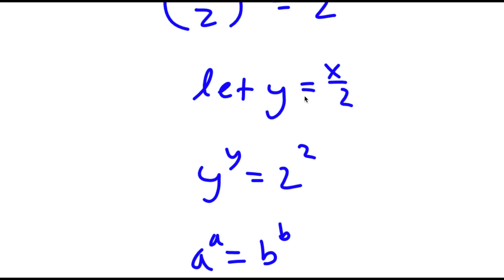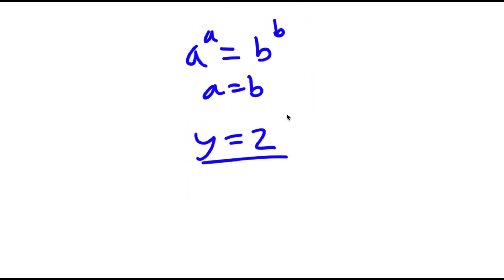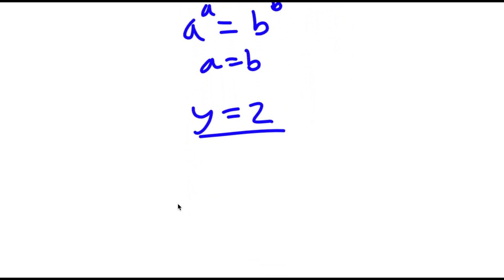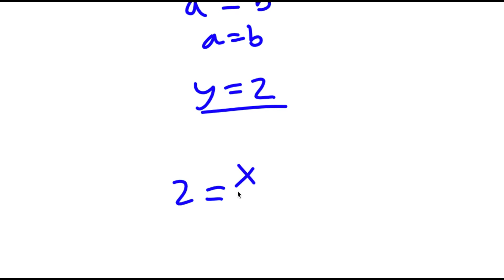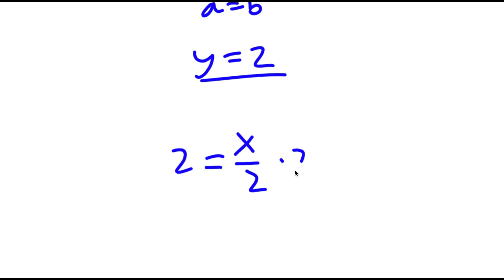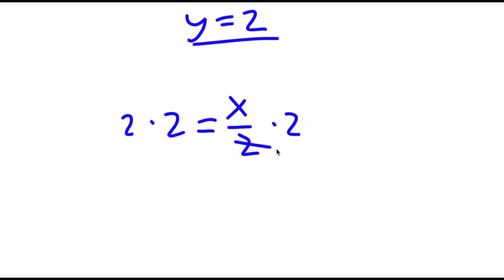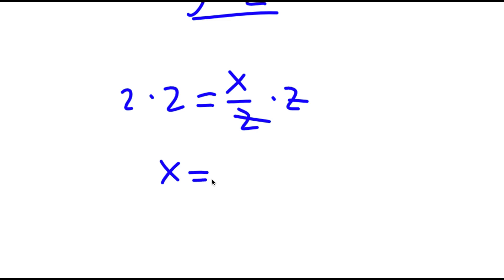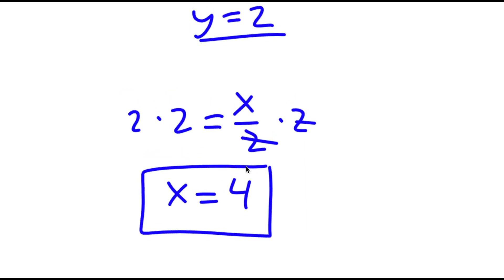Remember, we set y equal to x/2. So if y equals 2 and y is also equal to x/2, this means 2 is equal to x/2. Multiplying both sides by 2, the 2s cancel and I get x is equal to 4. So this is my answer.